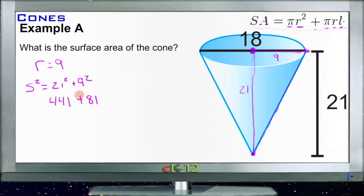If we add those two together, we get s squared equals 522. Then we need to take the square root of both sides, so we get s equals the square root of 522, which is about 23 units. So this length here then is 23.